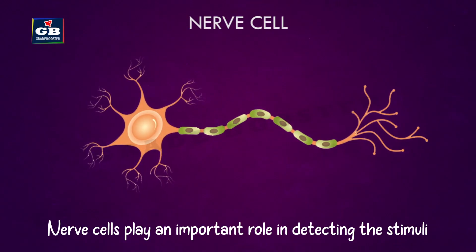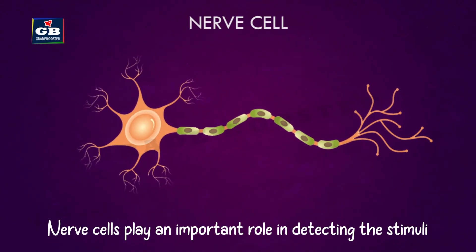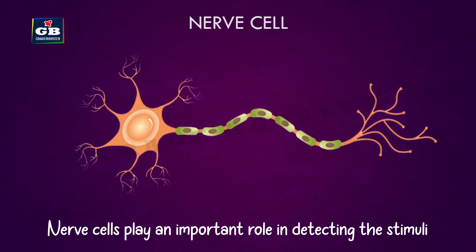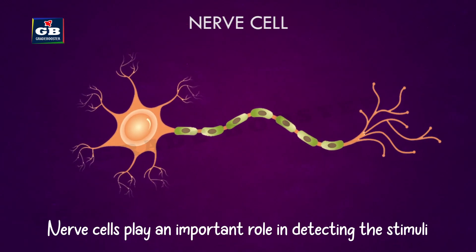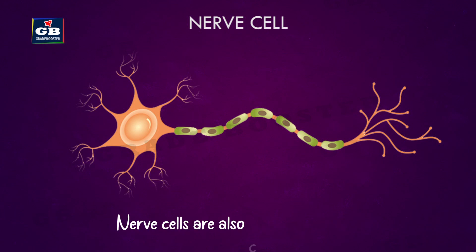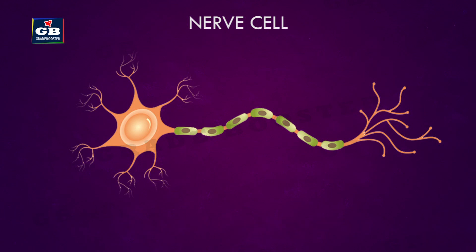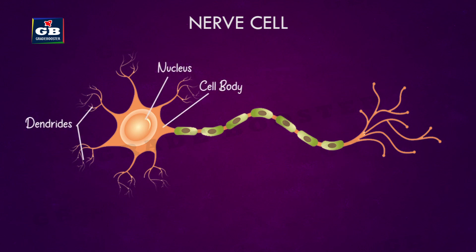Nerve cells play an important role in detecting the stimuli. Nerve cells are also called neurons. Each neuron has different parts like cell body, nucleus, dendrites, axon, and nerve endings.